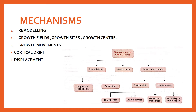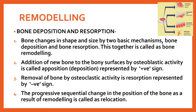The first mechanism is remodeling. Bone changes in shape and size by two basic mechanisms: bone deposition and bone resorption, and together these are called bone remodeling. Bone deposition occurs due to osteoblastic activity when bone gets deposited, and bone resorption is where bone gets removed. Together this is known as bone remodeling.